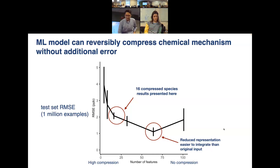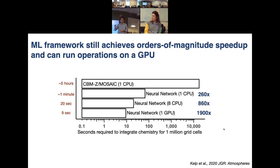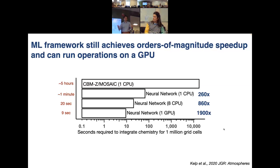The timing results: integrating one million grid cells using the CBMZ-MOSAIC box model written in Fortran on a single CPU takes around 5 hours. Running the same number of predictions on the neural network system takes around 1 minute — about 260× speedup. With additional resources like more CPUs or a GPU, we can go from 5 hours down to almost 9 seconds. So we're getting the kind of timing results we want alongside high accuracy.